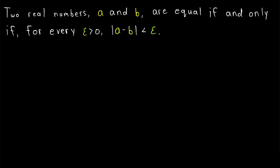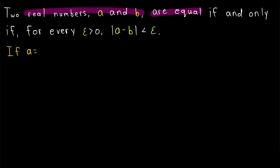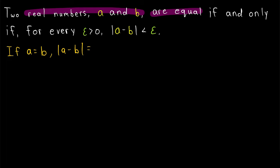This is an if and only if statement, so we've got two directions to prove. For the first one, we will assume that our real numbers a and b are equal, and we want to prove that for every epsilon greater than zero, the absolute value of a minus b is less than epsilon. This part is pretty trivial. Our hypothesis is that a equals b. If a is equal to b, the absolute value of a minus b is equal to the absolute value of zero, because a minus b is equal to zero. The absolute value of zero is equal to zero, and that is certainly less than epsilon for every epsilon greater than zero, and so we are done.